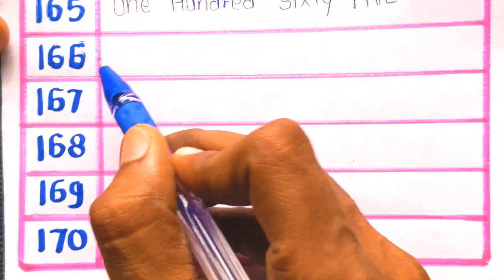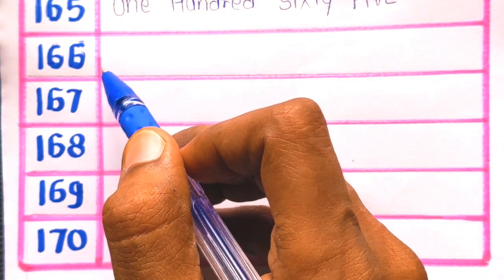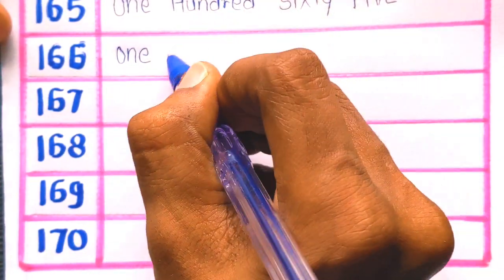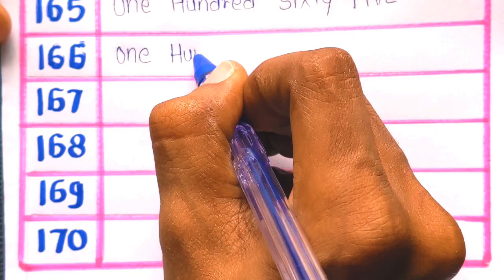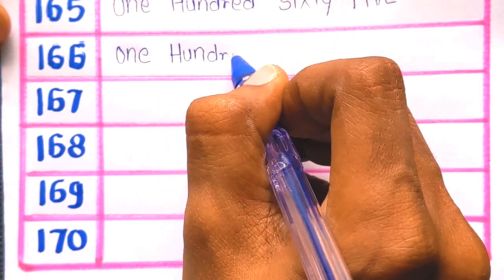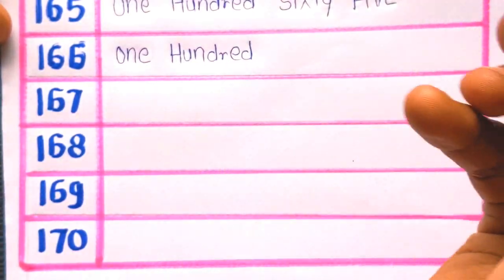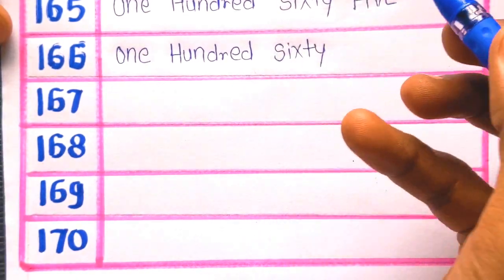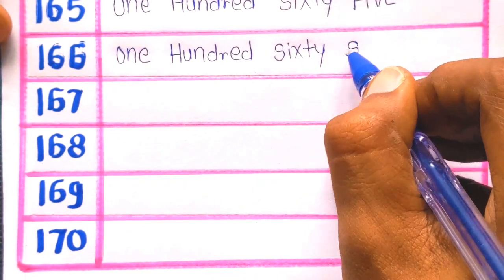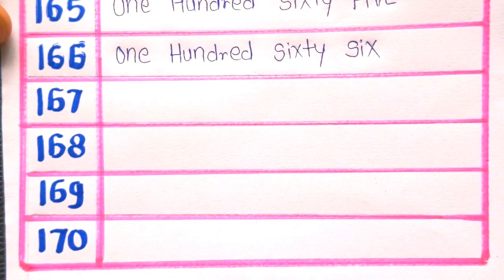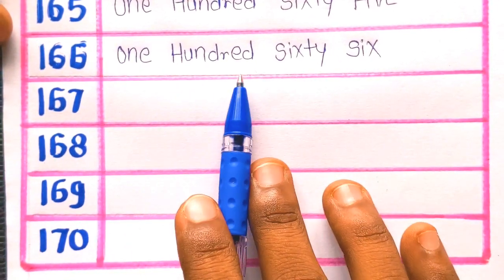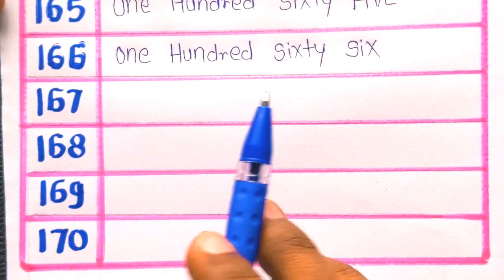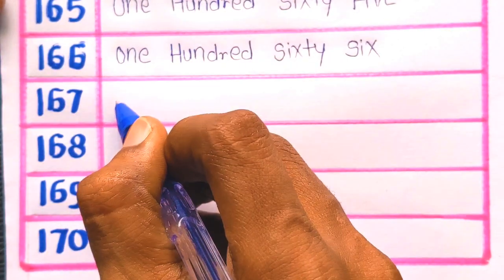Next number is 166: O-N-E, ONE, H-U-N-D-R-E-D, HUNDRED, S-I-X-T-Y, SIXTY, S-I-X, SIX. 166.